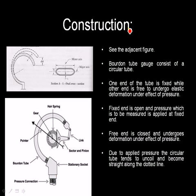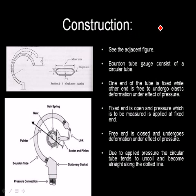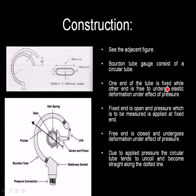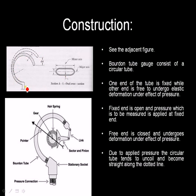Let us see the construction. Bourdon Tube Gauge consists of a circular tube. One end of the tube is fixed, this is the fixed end.